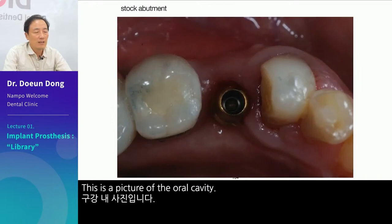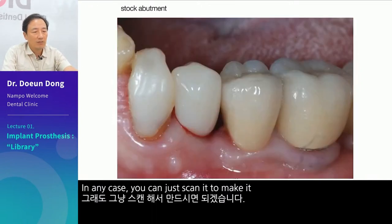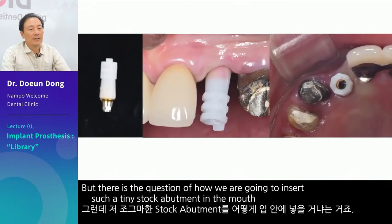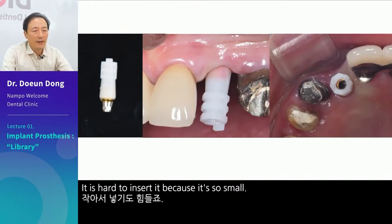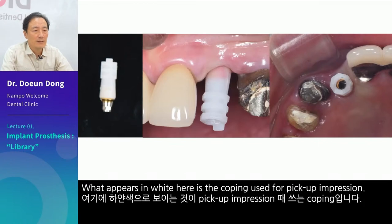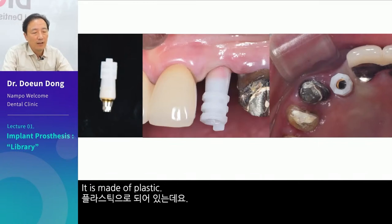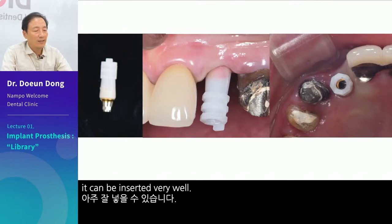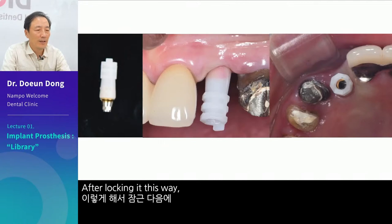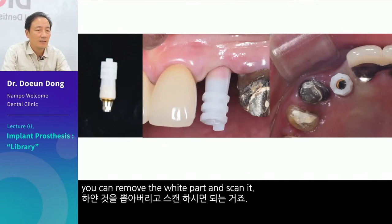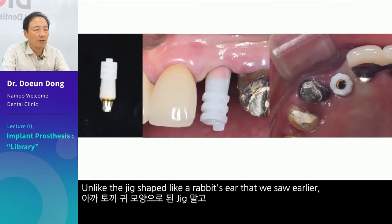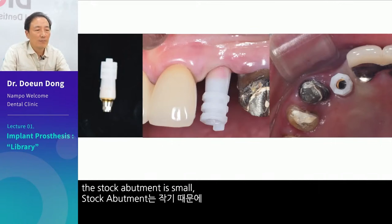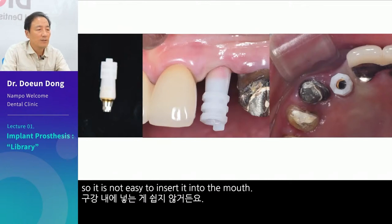This is a picture of the oral cavity — it went too deep into the sub. In any case, you can just scan it to make it. But there is the question of how we are going to insert such a tiny stock abutment in the mouth — it is hard to insert because it's so small. What appears in white here is the coping used for pickup impression, made of plastic. Drill a hole in the upper part at high speed and modify it — it can be inserted very well. After locking it this way, you can remove the white part and scan it. Unlike the jig shaped like a rabbit's ear, the stock abutment is small, so it is not easy to insert into the mouth.